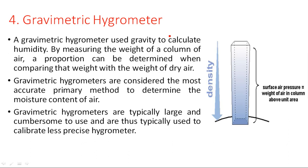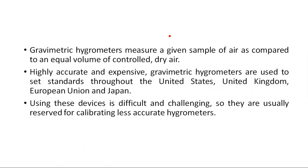Gravimetric hydrometers are typically large and cumbersome, and are thus used to calibrate less precise hydrometers. They measure a given sample of air compared to an equal volume of controlled dry air. Highly accurate and expensive, they are used to set standards in the United States, United Kingdom, European Union, and Japan. For most long-term applications, we use resistive, capacitive, and thermal hydrometers, as gravimetric ones are very rarely used.